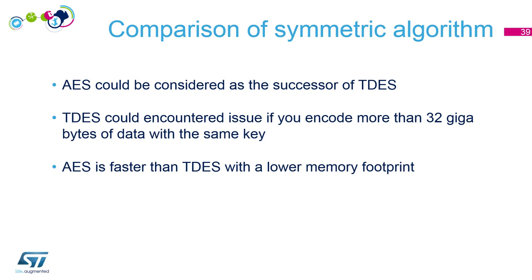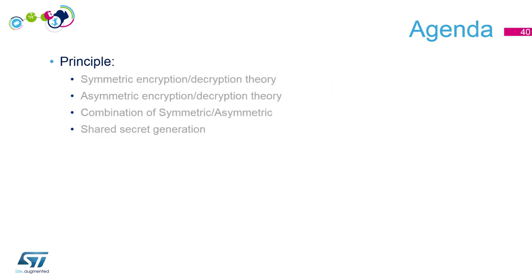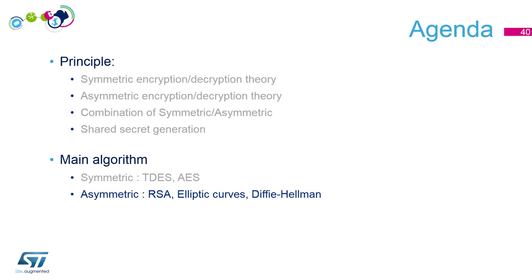Let's check our agenda. We've seen different principles for symmetric encryption — using the same key to encrypt and decrypt. For asymmetric, we use the recipient's public key to encrypt and they decrypt with their private key. Combining both is a way to encrypt large volumes of data efficiently. We've also seen shared secret generation with Diffie-Hellman. Now we will see the main asymmetric algorithms: RSA, elliptic curves, and Diffie-Hellman.